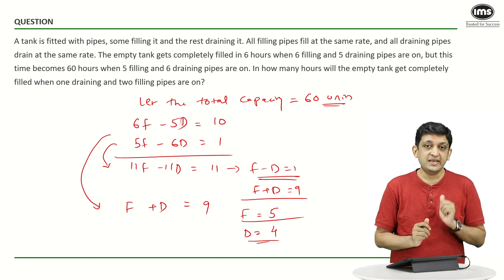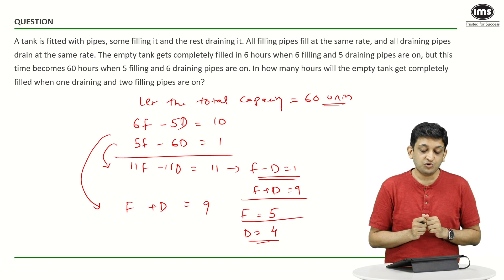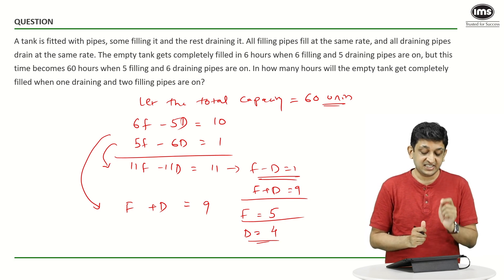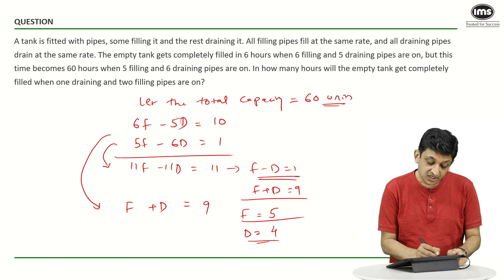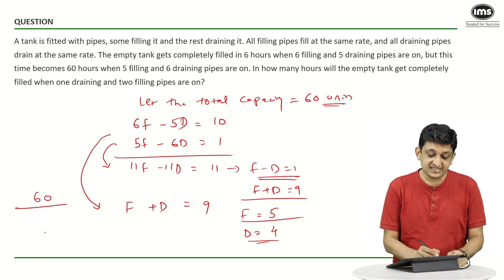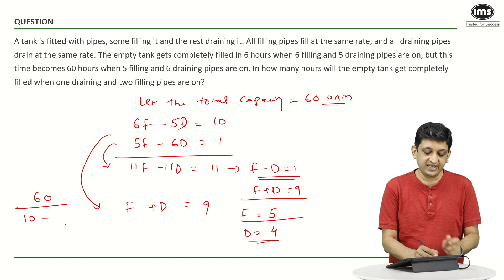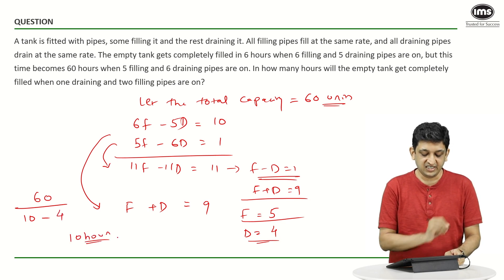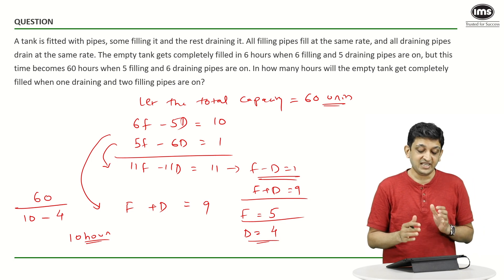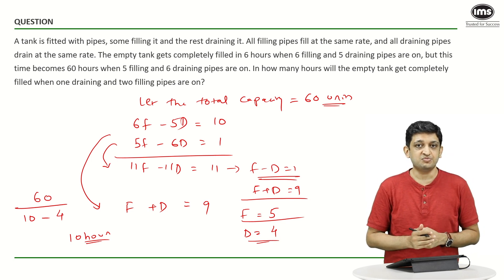Now, we have two filling pipes and one draining pipe and what do we have to do? We have to fill this tank which has a capacity of 60 units. So, what is the amount of time it will take? 60 divided by 2 filling that is 10 minus 1 draining that is 4. 60 by 6 is going to give you 10 hours as the total amount of time that it is going to take to fill this tank using this arrangement.